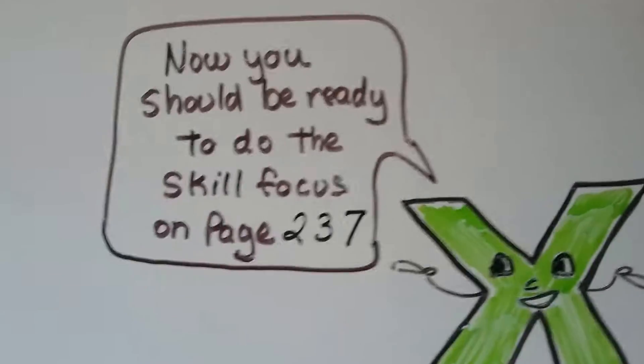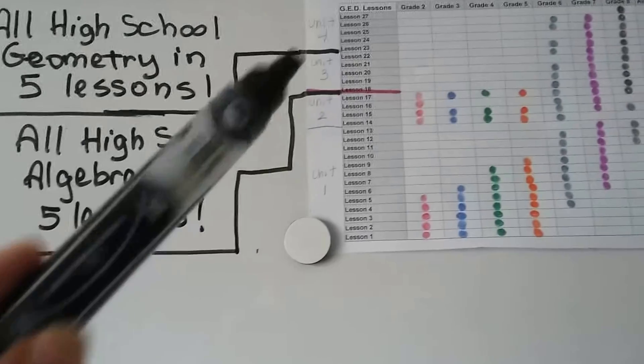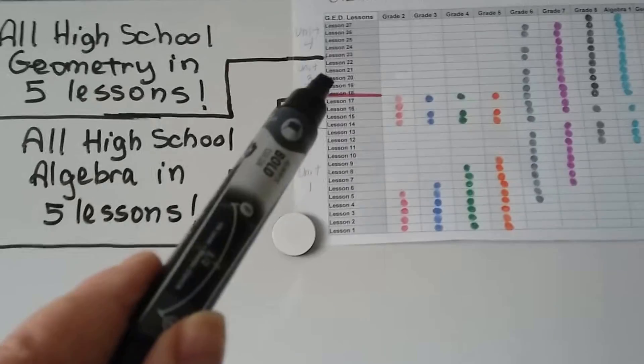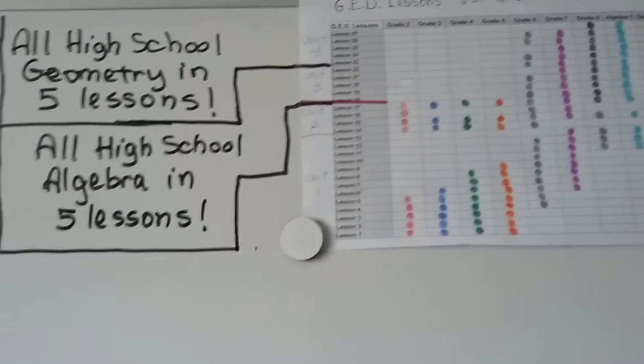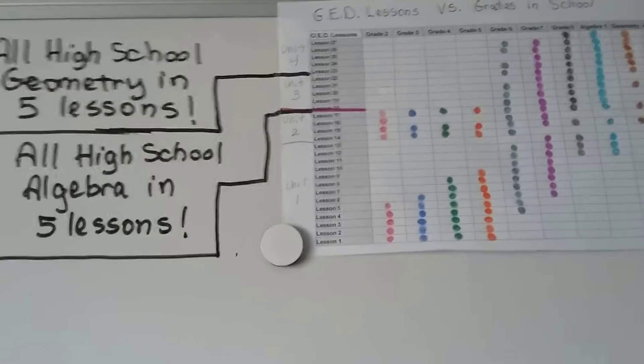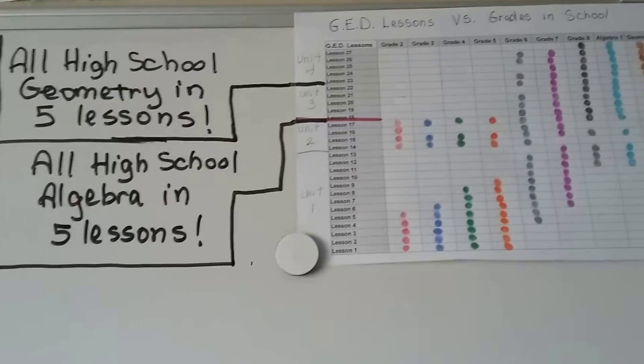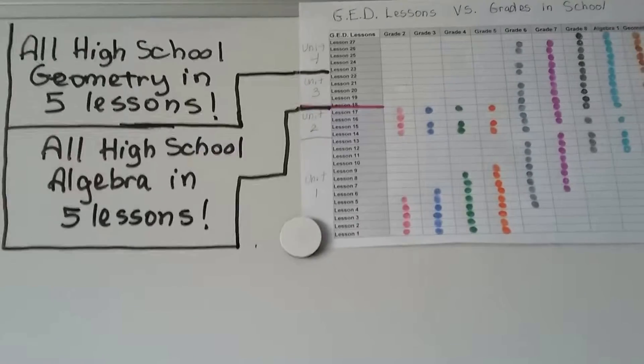You should be ready to do the skill focus on page 237, but I want you to realize that you're expected to learn all high school algebra in just these 5 little lessons, and then all of high school geometry in these 5 little lessons. And if someone said, come over to my house 5 times for 5 lessons, and I'll teach you all of high school algebra, you'd probably think they were crazy, or that the lessons were each going to last a week.